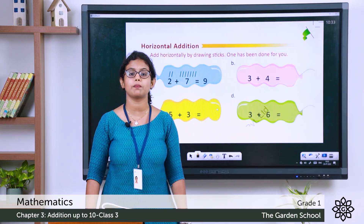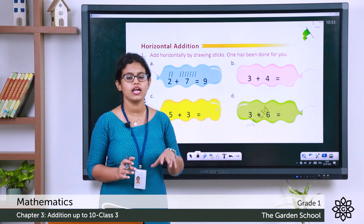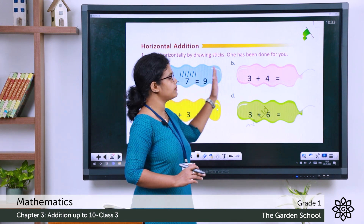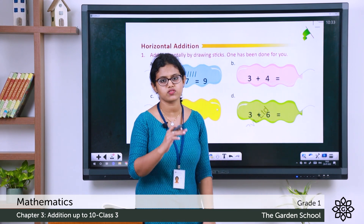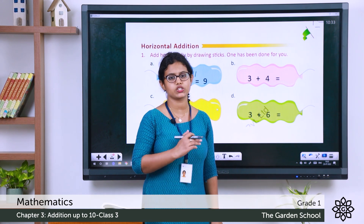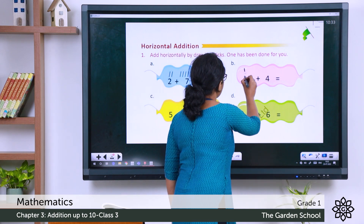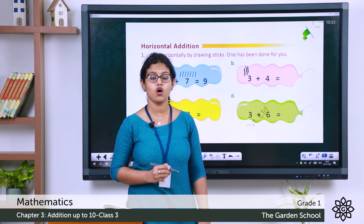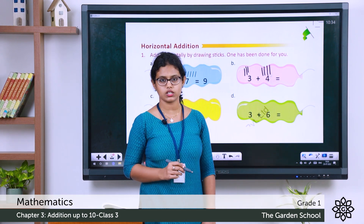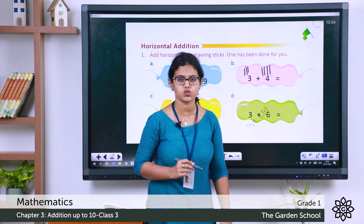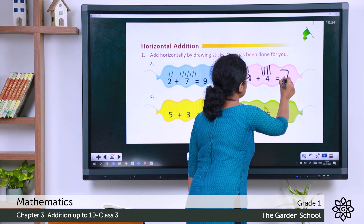Moving on to page number 39 in your textbook — horizontal addition. We learned that horizontal addition means adding two numbers side by side. For the second question, 3 plus 4: draw 3 sticks for 3 — 1, 2, 3 — then 4 sticks for 4 — 1, 2, 3, 4. Count all sticks: 1, 2, 3, 4, 5, 6, 7. So 3 plus 4 is 7.